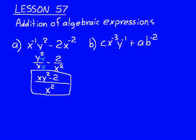Let's do another one: cx^(-3)y^(-1) + ab^(-2). Let's add those together. First thing we need to do is make the exponents positive, then we'll recognize that we have fractions. So we have c/(x^3y) + a/b^2.